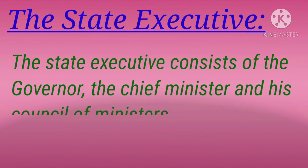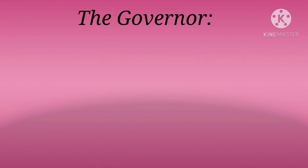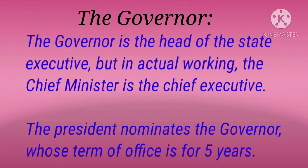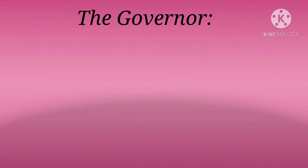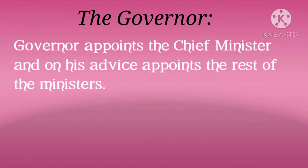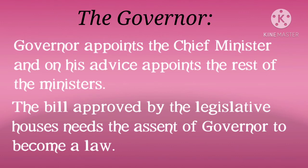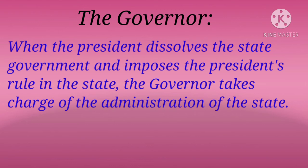Let us now move on to the State Executive. The State Executive is composed of the Governor, the Chief Minister and his Council of Ministers. The Governor is the head of the State Executive, but in actual working, the Chief Minister is the Chief Executive. The President nominates the Governor, whose term of office is for 5 years. To become a Governor, one must be a citizen of India, should have completed 35 years of age, and should not be a member of either Parliament or State Legislature. The Governor appoints the Chief Minister and, on his advice, appoints the rest of the Ministers. The bill approved by the Legislative Houses needs the assent of the Governor to become a law. When the President dissolves the State Government and imposes the President's rule in a State, the Governor takes charge of the administration.